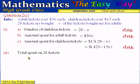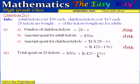Part two asks us to find the total amount spent on all 28 tickets. The total is the amount for adult tickets plus the amount for children's tickets: 30x plus (420 minus 15x). Combining like terms, 30x minus 15x gives 15x, so the total is $420 plus 15x.